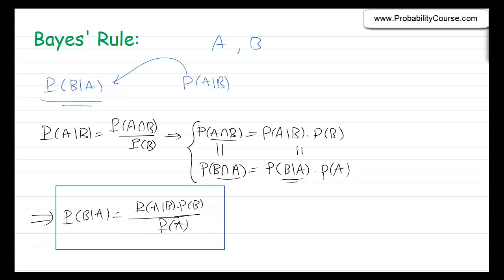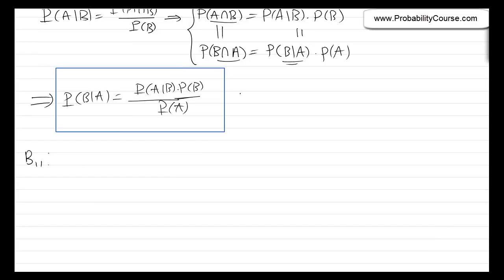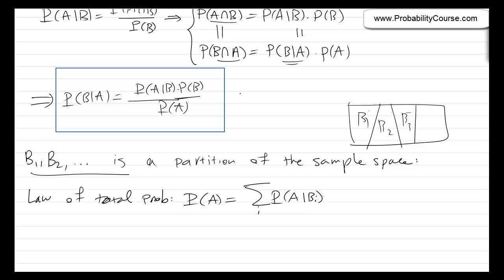It turns out very often when we are using the Bayes' rule, we use a specific form of it. Suppose that B1, B2, and so on is a partition of the sample space. Remember, a partition of the sample space is a collection of sets B1, B2, B3, and so on, such that their union is the entire sample space and they are disjoint. If we have a partition of the sample space, we discussed the law of total probability, which states that probability of any event A can be written as the summation of probability of A given Bi times probability of Bi.